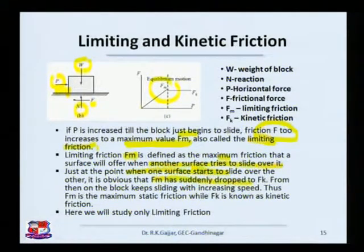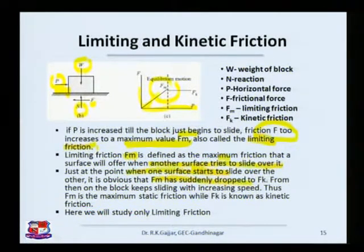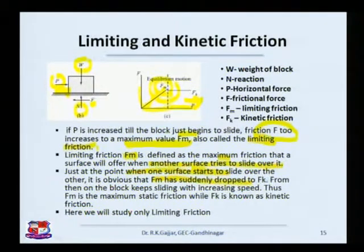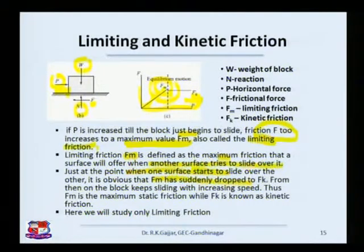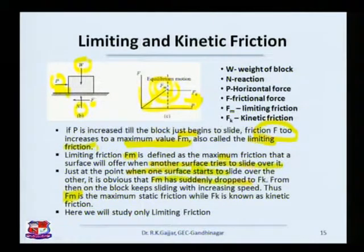Look at this graph. As P keeps increasing, f increases along a line. At one instant there is motion — the body slides. The moment the body slides, there is a sudden drop from Fm to a value Fk. That means the frictional force is now not the limiting friction — not the maximum friction — it has reduced. The point of maximum static friction has been crossed, and what follows is called kinetic friction, Fk.